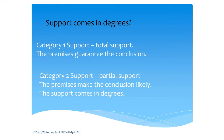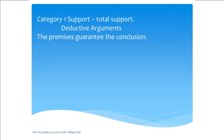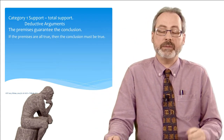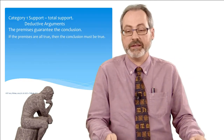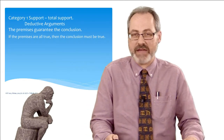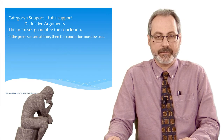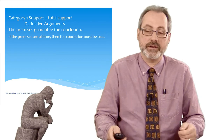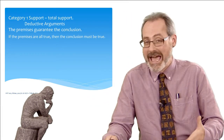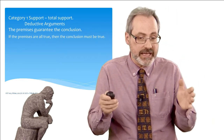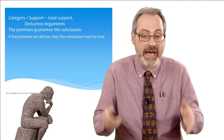The name for category one — total support — is a deductive argument. Here the premises guarantee the conclusion. We can unpack this through the notion of a valid argument: if the premises are all true, then the conclusion must be true. It's very important to reflect on this. It doesn't say the premises are actually true — it says if the premises are true, then the conclusion must be true. The if-then structure is very important when we think about valid deductive arguments.